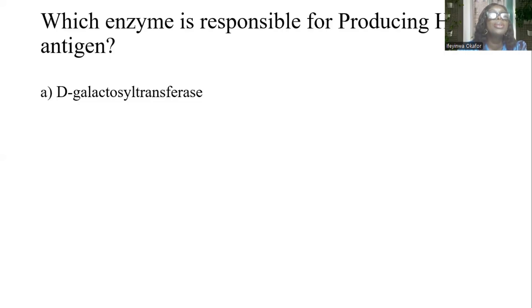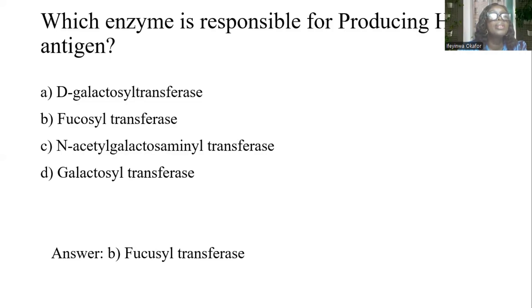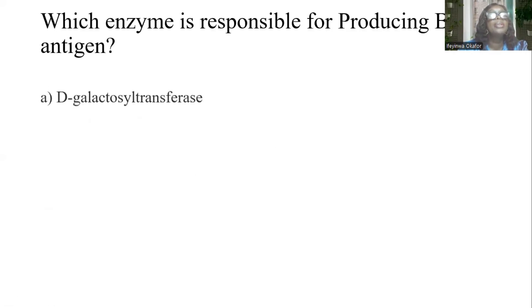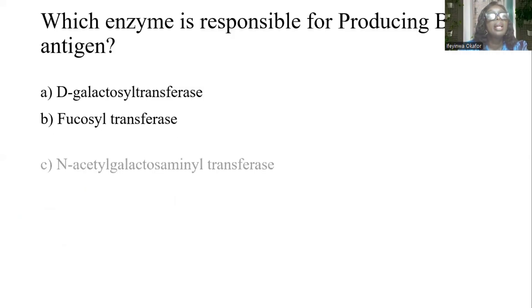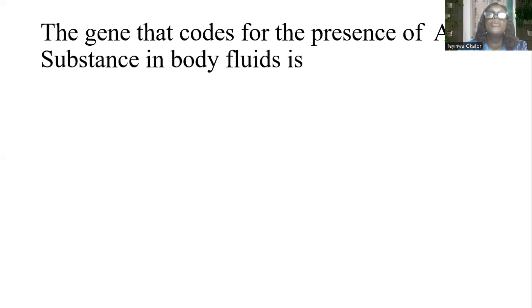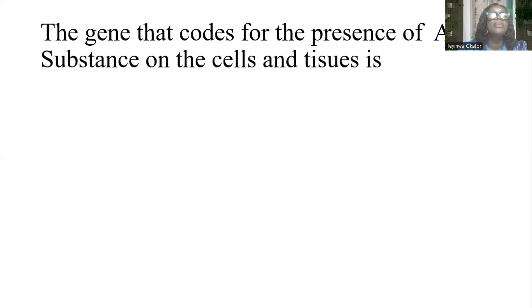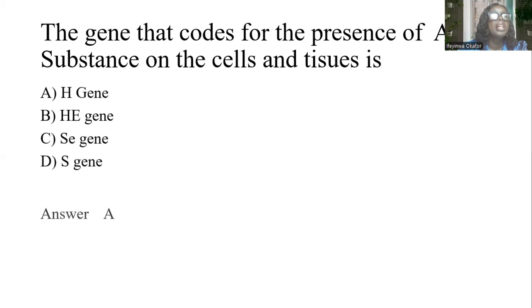Which enzyme is responsible for producing H antigen? The answer is fucosyltransferase. The gene that codes for the presence of A and B substance in body fluids is the Se gene. The gene that codes for the presence of A and B substance on cells and tissues is the H gene. The answer is A: H gene.